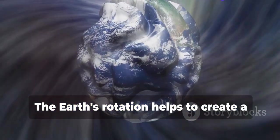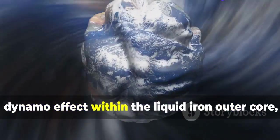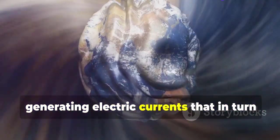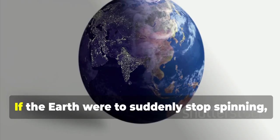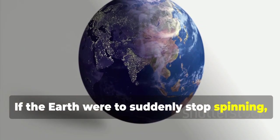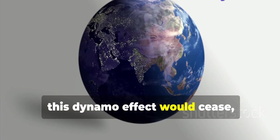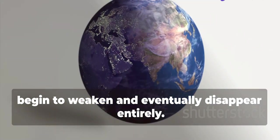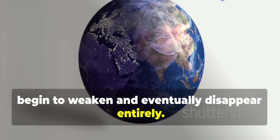The Earth's rotation helps to create a dynamo effect within the liquid iron outer core, generating electric currents that in turn produce the magnetic field. If the Earth were to suddenly stop spinning, this dynamo effect would cease, and the Earth's magnetic field would begin to weaken and eventually disappear entirely.